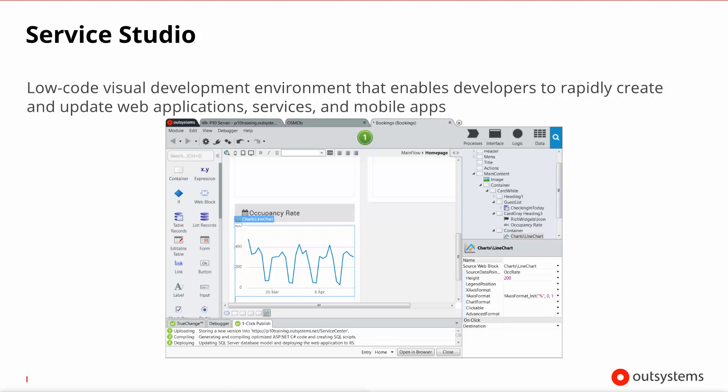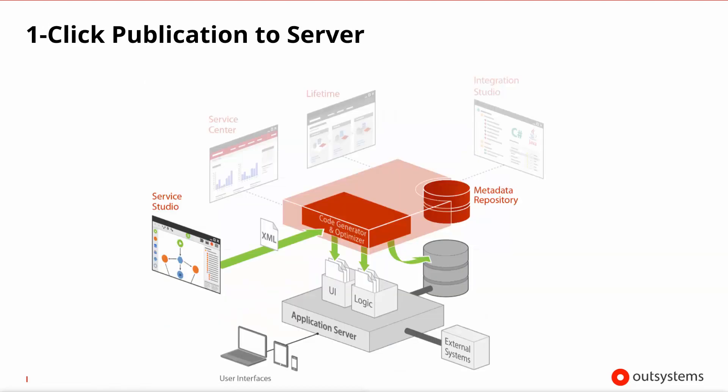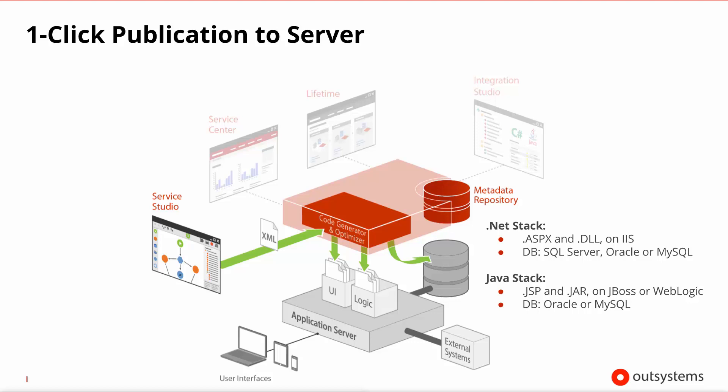We will drill into every single one of these panels in a later lesson. After you design your application in Service Studio, you can publish it to the server. A blueprint of what you visually designed in Service Studio is sent to the server and compiled to the appropriate code, screens and data model necessary for it to be made available in the application server.